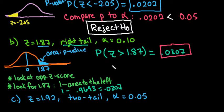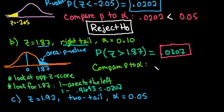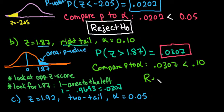Now we compare our p-value to our alpha. We see that 0.0307 is less than 0.10, so again, for this one, we are going to reject the null hypothesis.